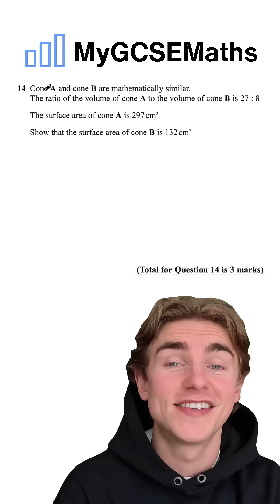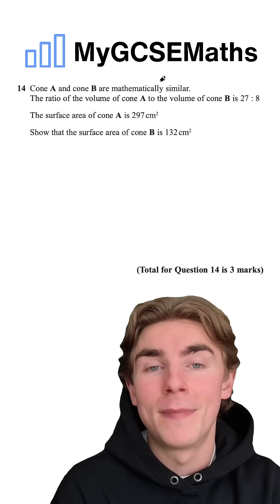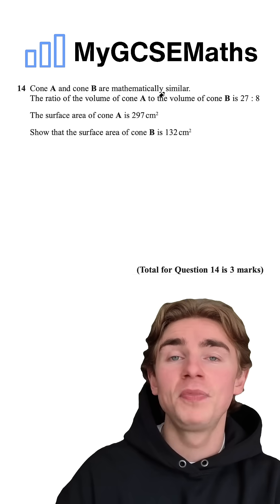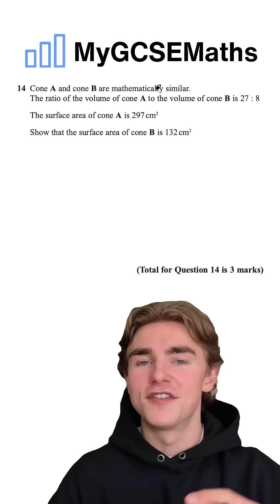Let's have a look at question number 14 here. It says that cone A and cone B are mathematically similar. What does this mean? It means that they're the same shape, just different sizes.